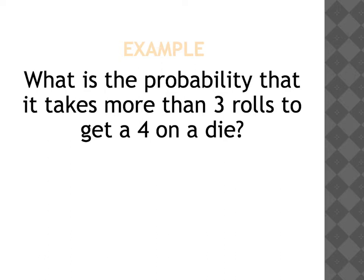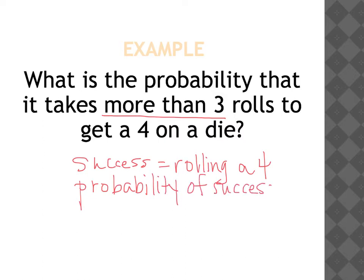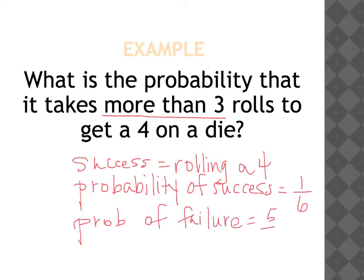Many geometric problems are straightforward if worded like the jack example with replacement — fail so many times and succeed on your final trial. The problems can get more complicated. For example, if we want the probability that it takes more than three rolls to get a four on a die, our success is rolling a four. The probability of success is 1/6, and the probability of failure is 5/6. This is more complicated because we want to know it will take more than a given number of tries. We'll start by looking at a probability distribution to think about how to answer this.